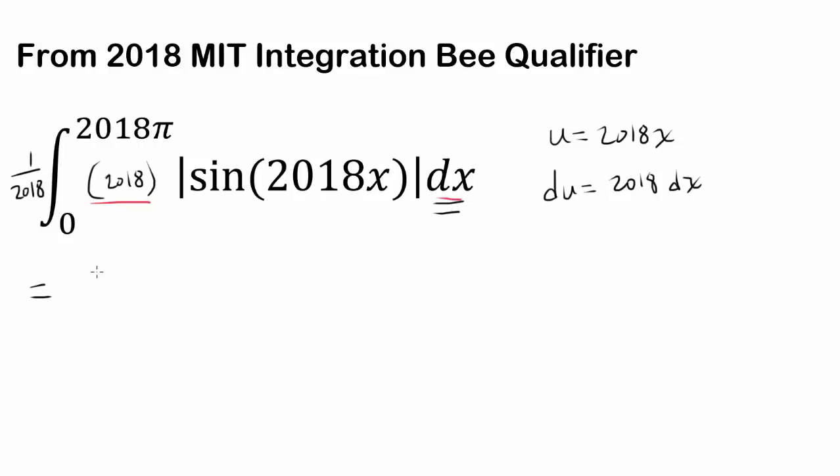So what do we have? We have 1 over 2018 and we have integral. We are about to worry about bounds, but let's do the inside expression first. We have absolute value of sine of u, 2018x is u, this was intentional, and we have 2018 dx, which is equal to du.